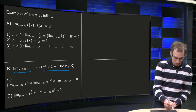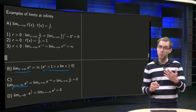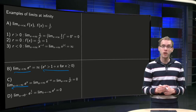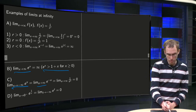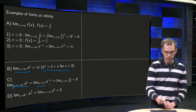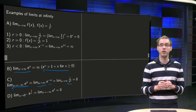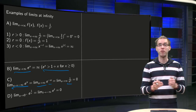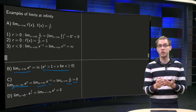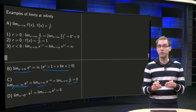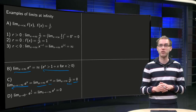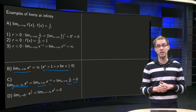What happens to the exponential function if x goes to minus infinity? We can substitute u equals minus x, so we get the limit as u goes to infinity of e to the power minus u. Now e to the power minus u equals 1 over e to the power u, so we have the limit of 1 over e to the power u. Since e to the power u goes to infinity, we get 1 over infinity equals 0, which corresponds to the graph of the exponential function going to 0 as x goes to minus infinity.